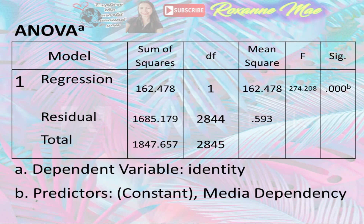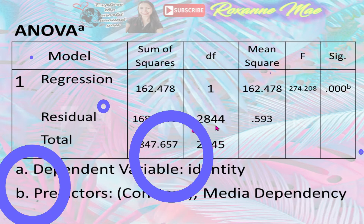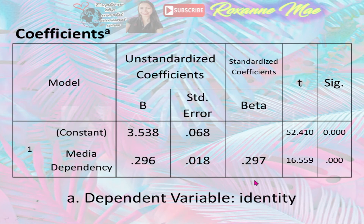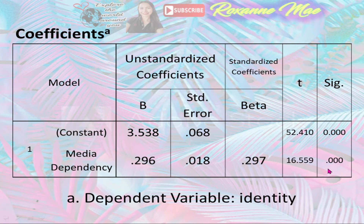The ANOVA produces a p-value of 0.000, which lies below all alpha values, so one could conclude that the sense of identity of Judeans changes significantly with respect to their media dependency. Using the regression equation y = 3.538 + 0.296x obtained from the Coefficients table, one can predict the dependent variable score for each independent variable score. Each x value substituted into the equation produces an ordered pair on the regression line — a best guess for the perceived sense of identity based on media dependency.